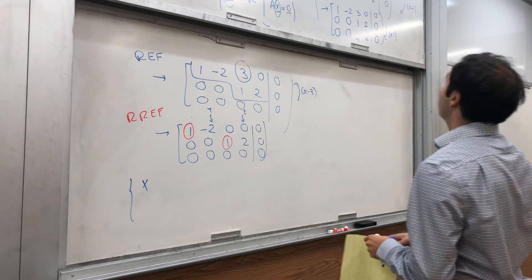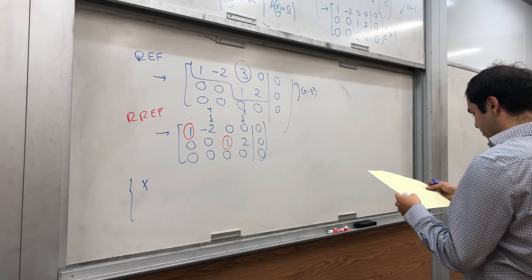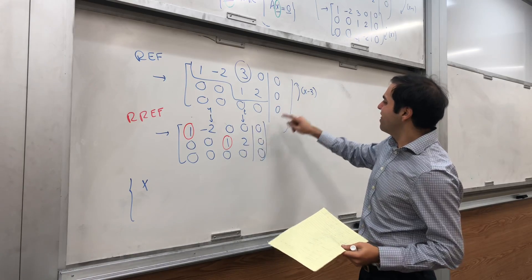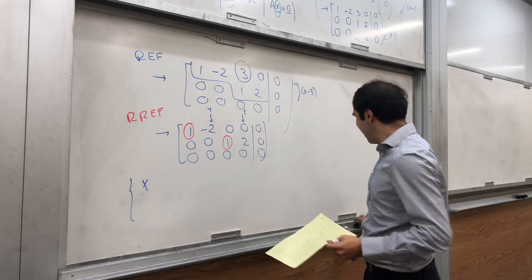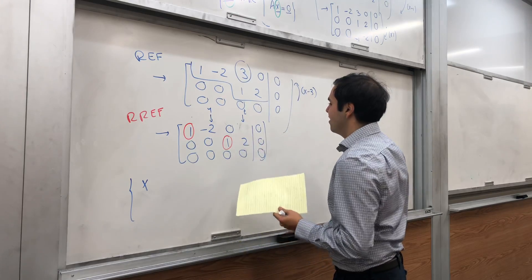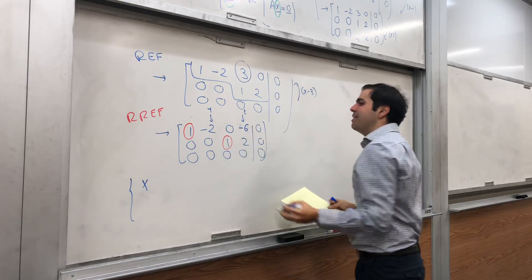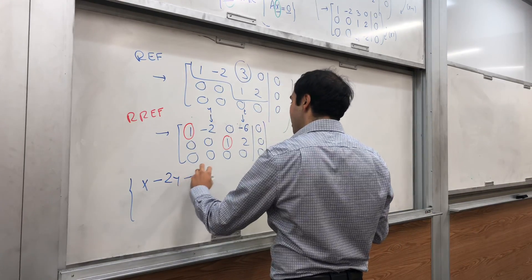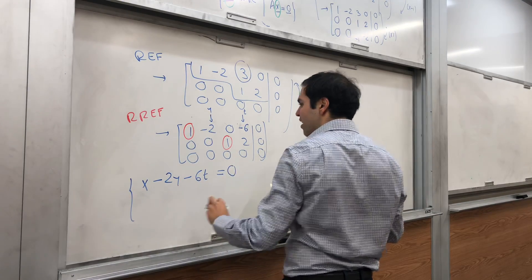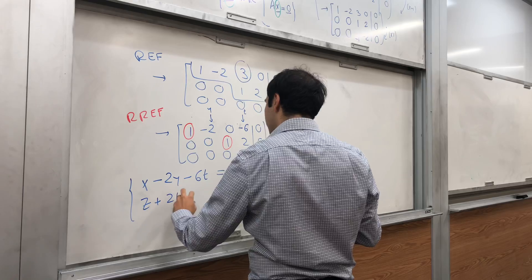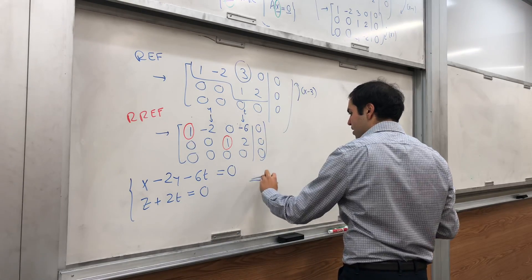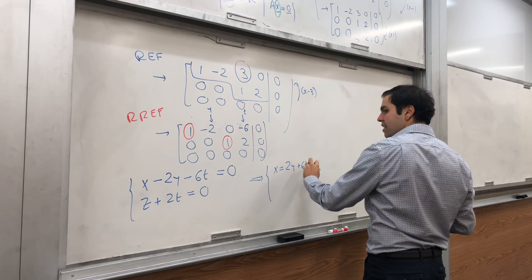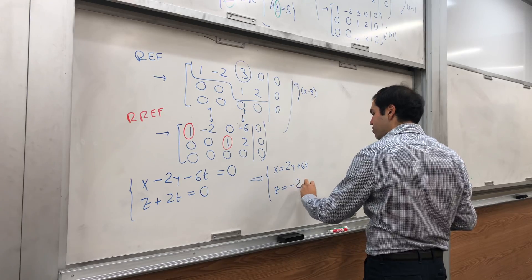So, what do we get then? X, wait, where's the, oh, sorry. All right. If you multiply this by minus 3, you get a minus 6. Sorry about that. I was like, where's the minus 6 going? Okay. Then, if you solve that, we get X minus 2Y minus 6T equals 0, and Z plus 2T equals 0. And, then, we just get X equals 2Y plus 6T, and Z equals minus 2T.